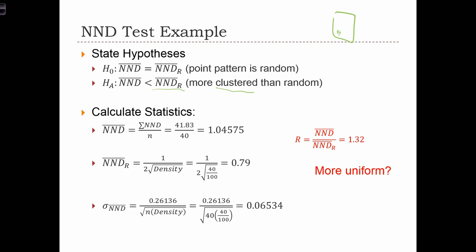So we calculate from the data a mean NND, which is 1.04. We calculate the NND bar R, so we had 1 over 2 root density.